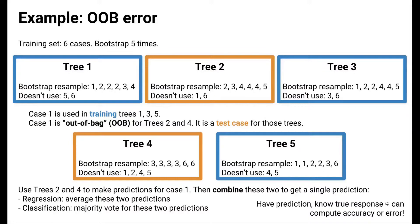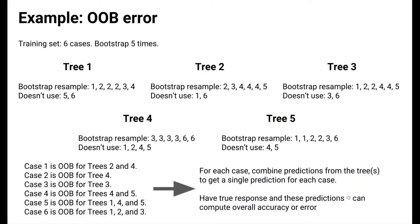Pause the video here and check for yourself how things work out for cases two through six — for which trees are they out-of-bag? The answers show that for each case we can see which trees it is out-of-bag for. For example, case two is out-of-bag for tree four. For all cases, we combine predictions from the trees for which each case is out-of-bag to get a single prediction. Because we have the true response for all cases, we can compute overall accuracy or overall error.